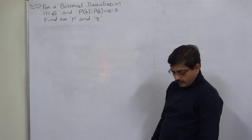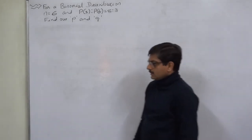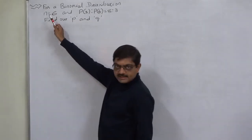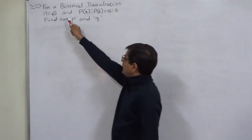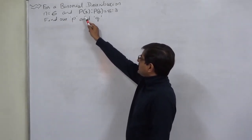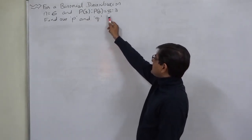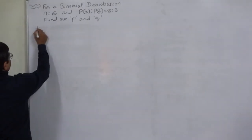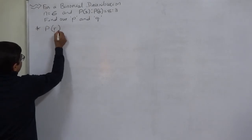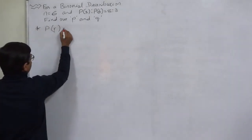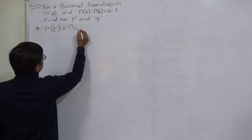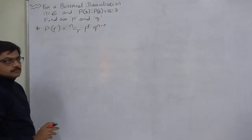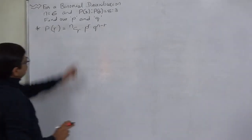This problem is from a binomial distribution. Given n equals 6, meaning the number of trials is 6, and the probability of 3 successes to the probability of 4 successes equals 8 to 3. We know that to find the probability of R successes in a binomial distribution, the formula is NCR into P raised to R into Q raised to n minus R.